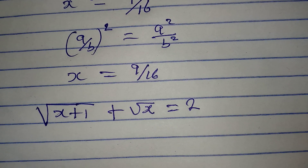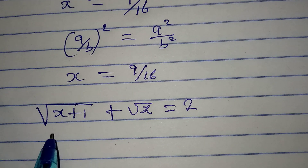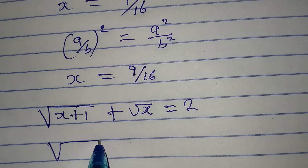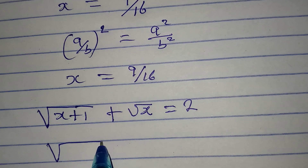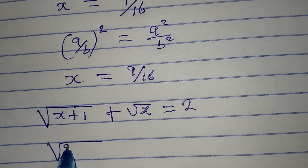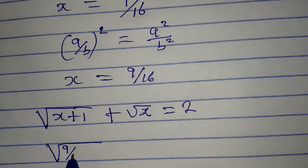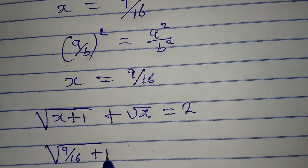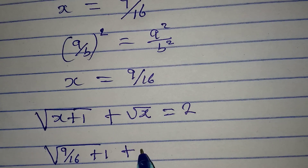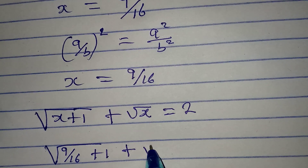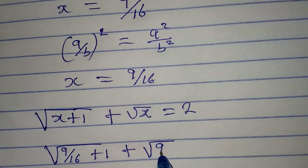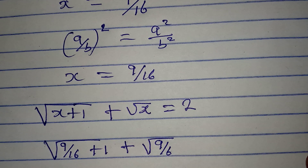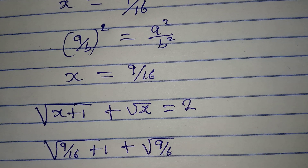We are going to substitute the value of x and see if we get 2. x is now 9 over 16, so we have square root of 9 over 16 plus 1, plus square root of 9 over 16. Will this give us 2?